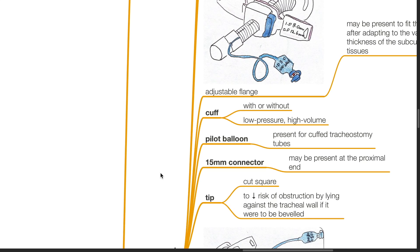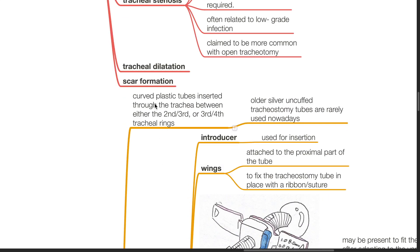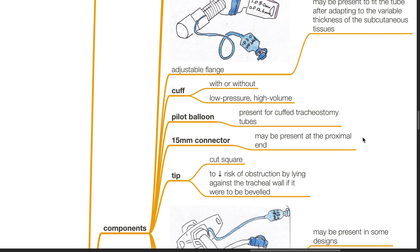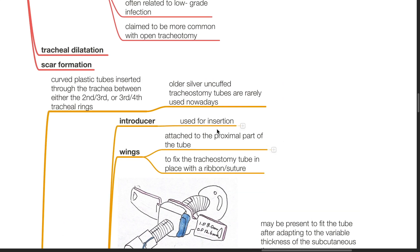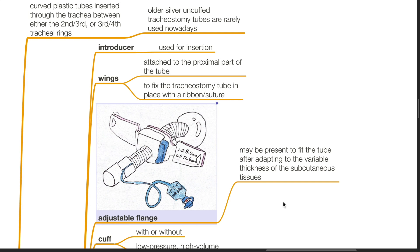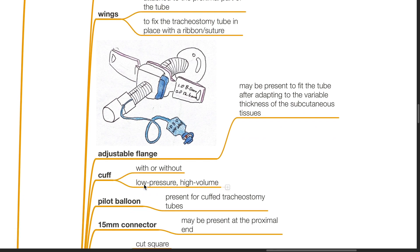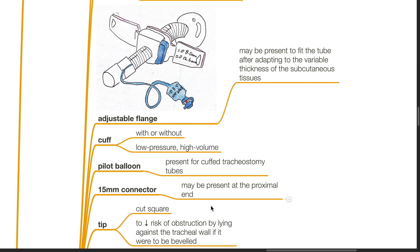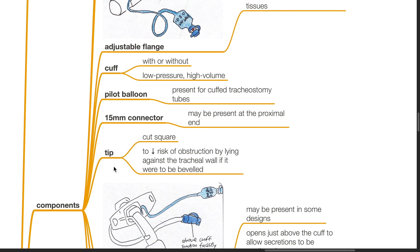Tracheostomy tubes are curved plastic tubes inserted through the trachea between either the 2nd and 3rd or 3rd and 4th tracheal rings. Older silver uncuffed tracheostomy tubes are rarely used nowadays. Components include an introducer used for insertion, wings attached to the proximal part to fix the tube with a ribbon or suture, and an adjustable flange to fit the tube after adapting to variable thickness of the subcutaneous tissues. A cuff may be present, which is low pressure and high volume, with a pilot balloon if the cuff is present. A 15mm connector may be present at the proximal end.